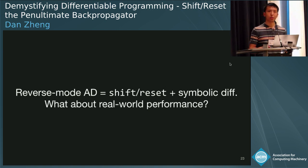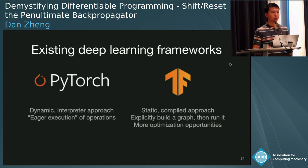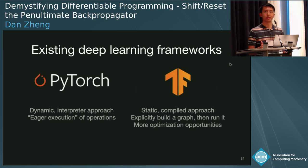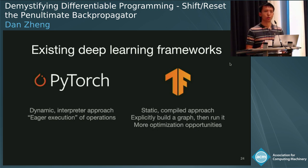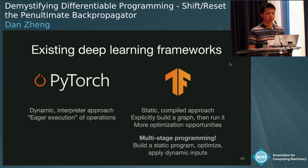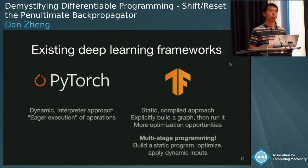Since this is the real-world session, what about the real-world performance of this approach? Let me briefly discuss some existing deep learning frameworks which implement reverse mode AD. Some frameworks like PyTorch are dynamic — they use an interpreter-based approach where operations are dispatched eagerly. Other frameworks like TensorFlow are more static and compiled: users explicitly build a graph of operations via DSL and then run the graph. This approach has led to more optimizations because the graph is like a whole program, enabling whole-program optimizations like operator fusion. This sounds a lot like multi-stage programming: building a static program, optimizing it, and then applying dynamic inputs. If we realize that TensorFlow is really just multi-stage programming, we can apply more generic multi-stage programming techniques to achieve TensorFlow's performance while gaining more expressivity.